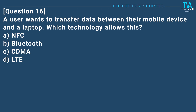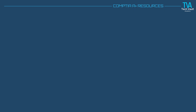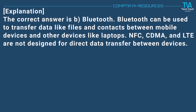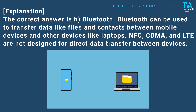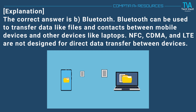Question 16. A user wants to transfer data between their mobile device and a laptop. Which technology allows this? A. NFC. B. Bluetooth. C. CDMA. D. LTE. The correct answer is B. Bluetooth. Bluetooth can be used to transfer data like files and contacts between mobile devices and other devices like laptops. NFC, CDMA, and LTE are not designed for direct data transfer between devices.